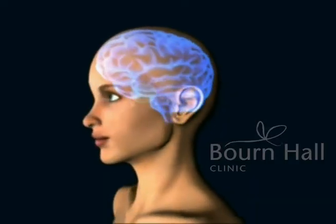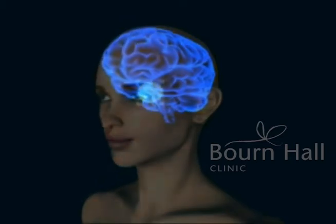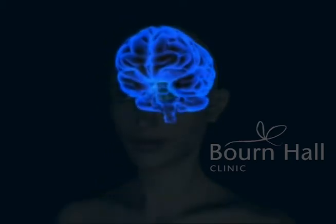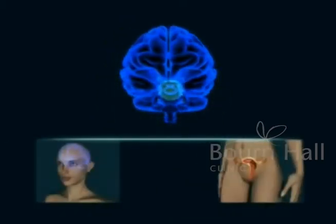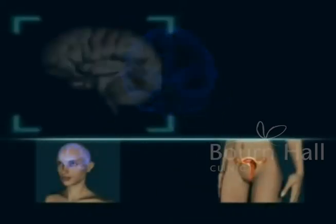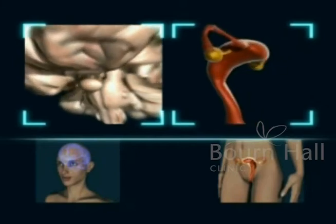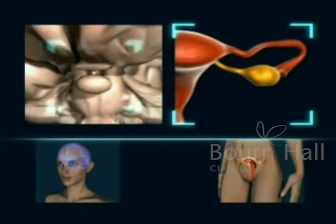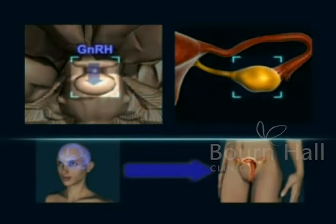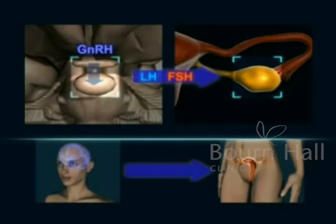There is a gland called the hypothalamus that exists in the brain and produces the hormone GNRH. This hormone causes the pituitary gland to secrete two hormones that control the growth and ovulation of the ovarian follicles.